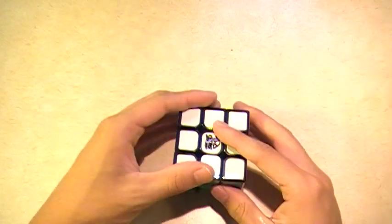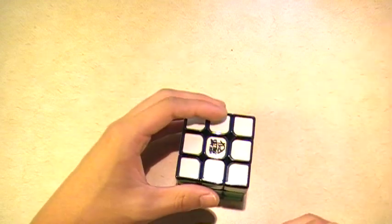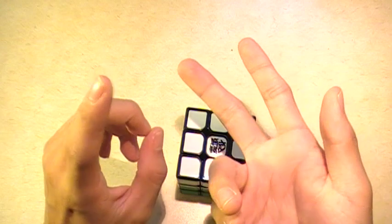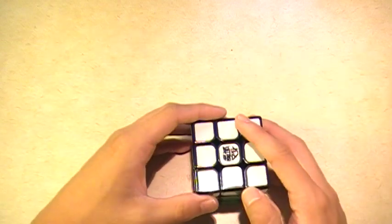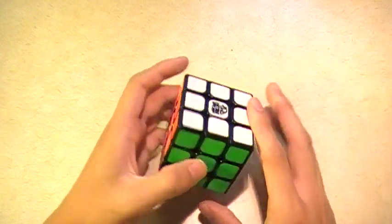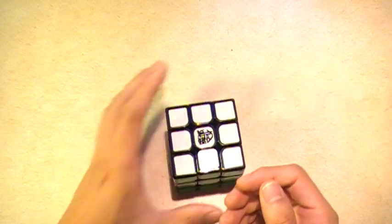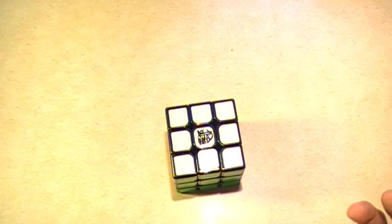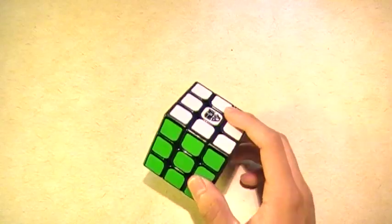Like back then, before the Fangshi came out, everyone defaulted back to either the Guhong or the Zhanchi. Those were the two cubes that people default back to, if they needed a new main, they would just pick one of those two. I feel like that the Aolong V2 is that type of cube. If you need just a good cube, just an overall good cube, you would get the Aolong V2.